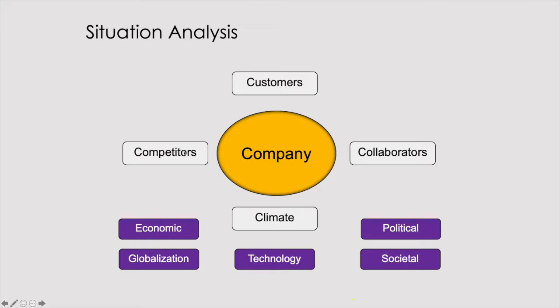We have competitors, and we consider them part of the micro environment because we can learn a lot about them. When they move, we can move, or we can see where they're positioned. Then we have the climate. Many textbooks call this a 5C analysis, but I like to call it a situation analysis — we are analyzing the situation we're in. And then there's the big macro things: what's happening in the global, technology, political, and societal world?